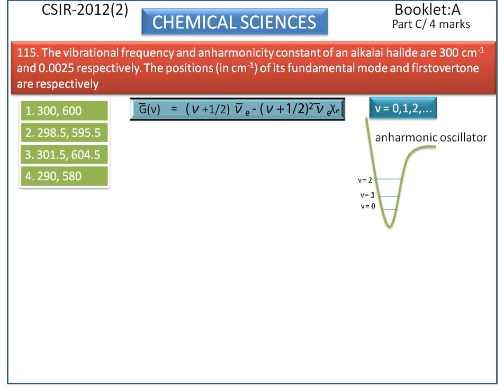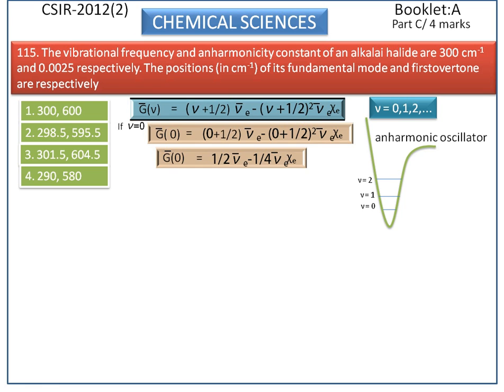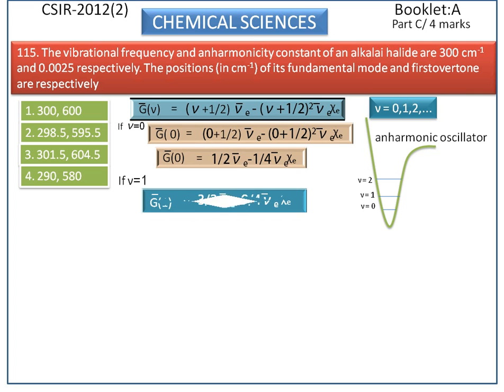Now we calculate the vibrational energy for the ground state. If we substitute nu equal to 0 in the above equation, we get the formula of the ground state. Next, we calculate the formula of the first excited state. Similarly, we calculate the formula for the second excited state.